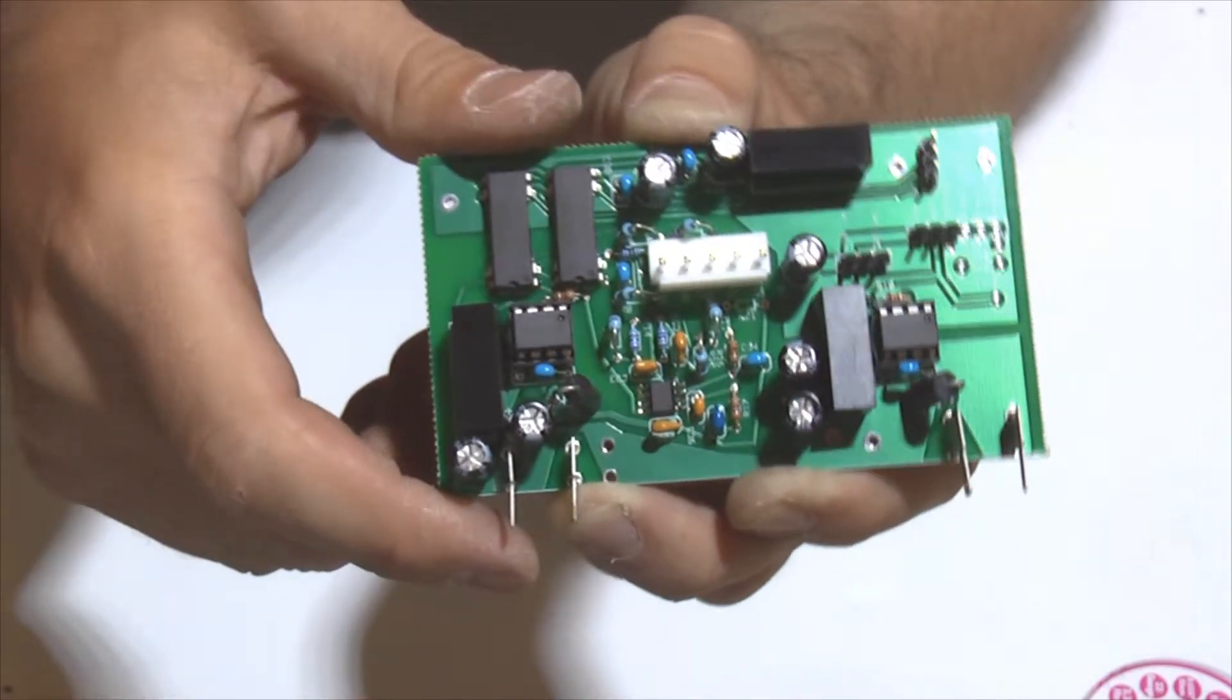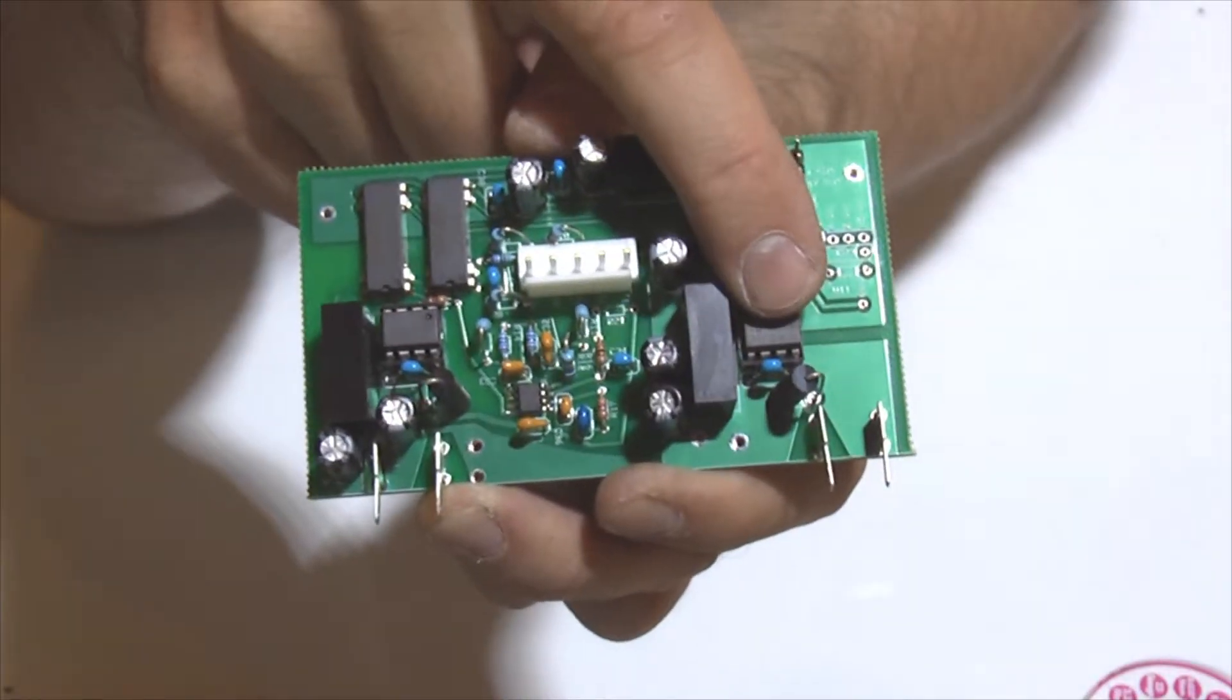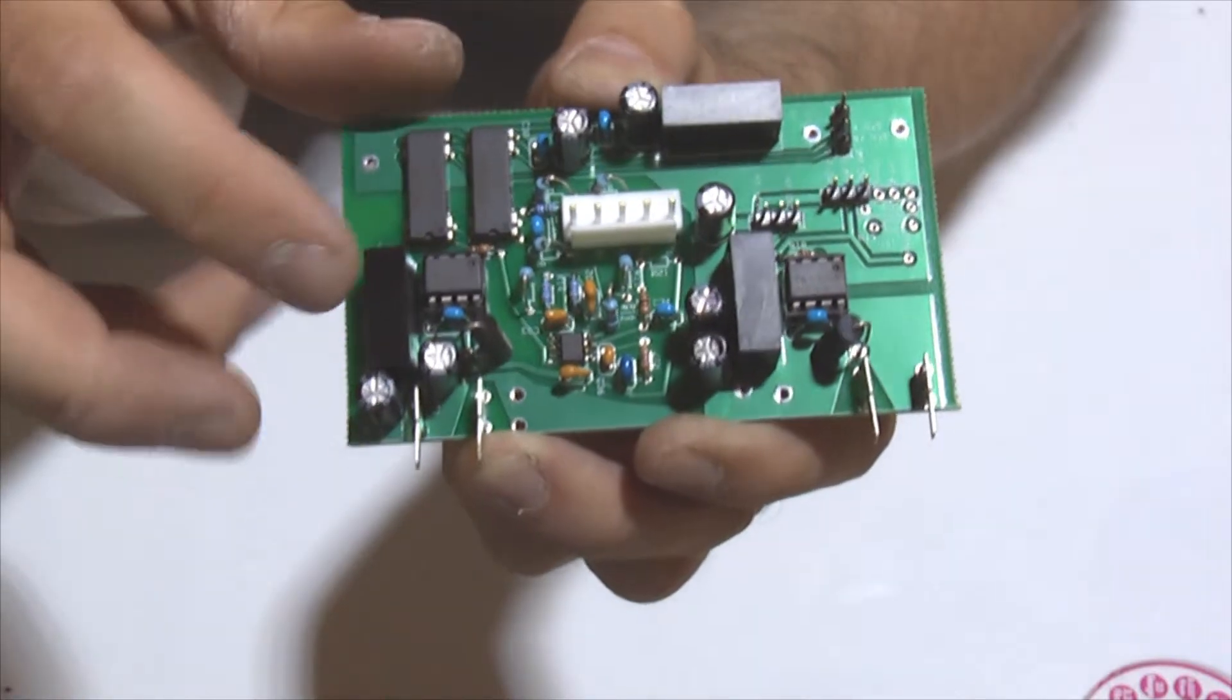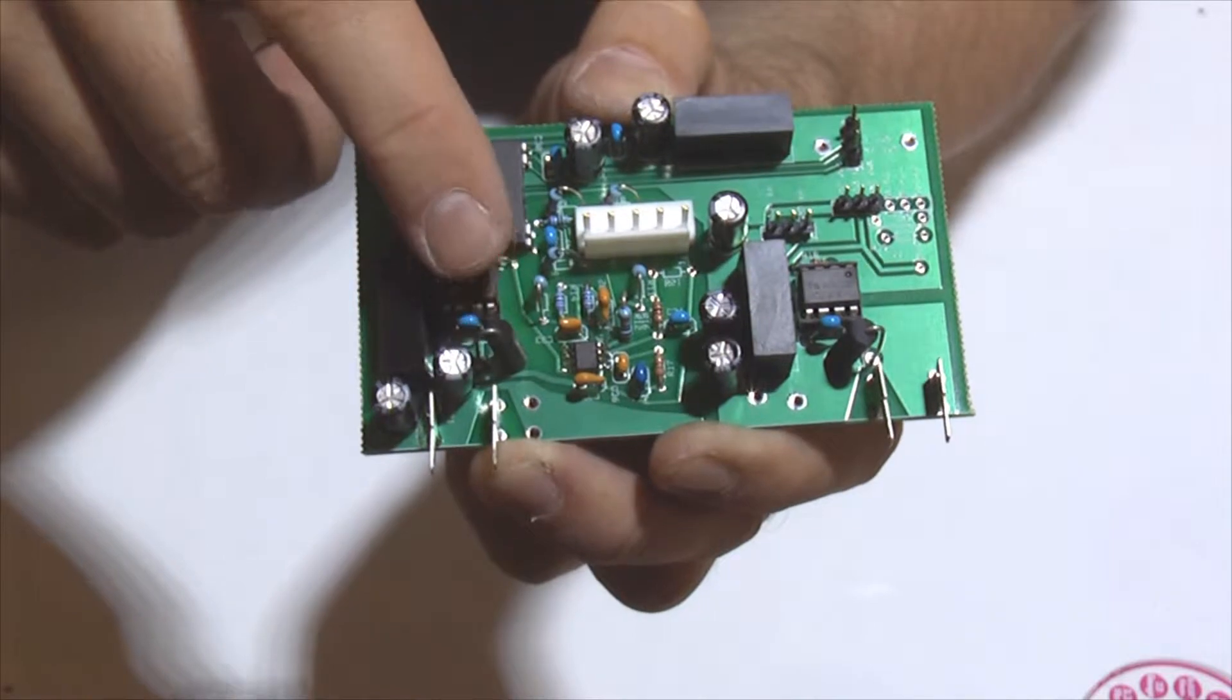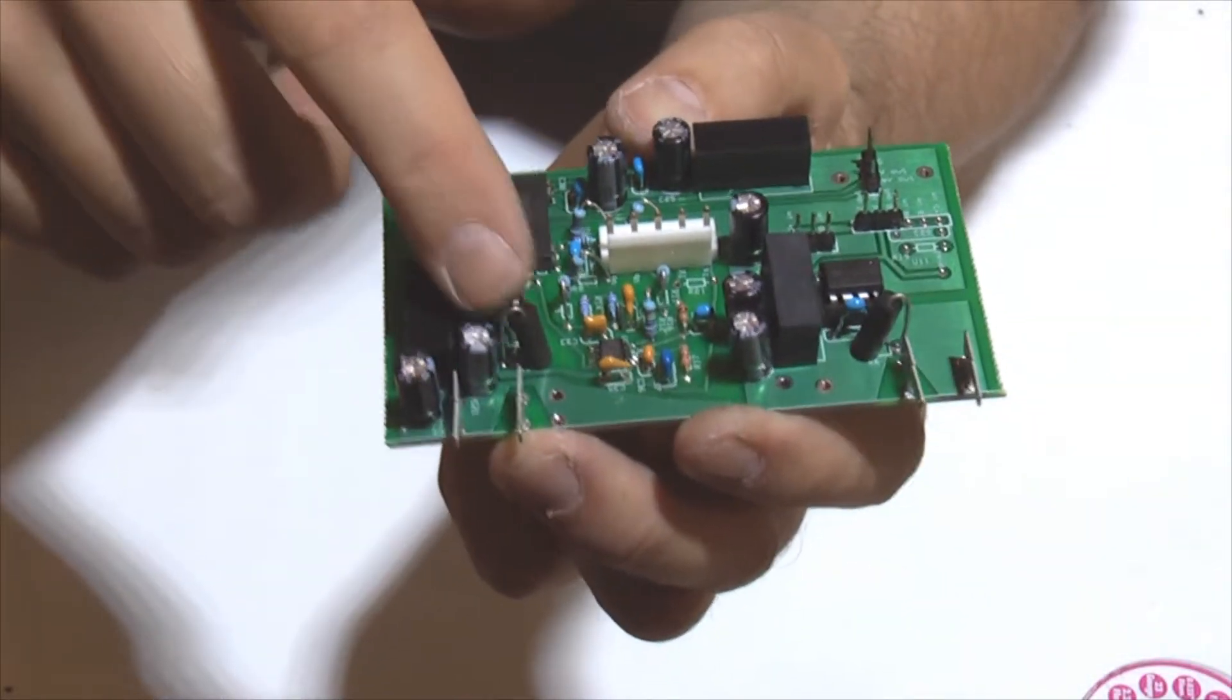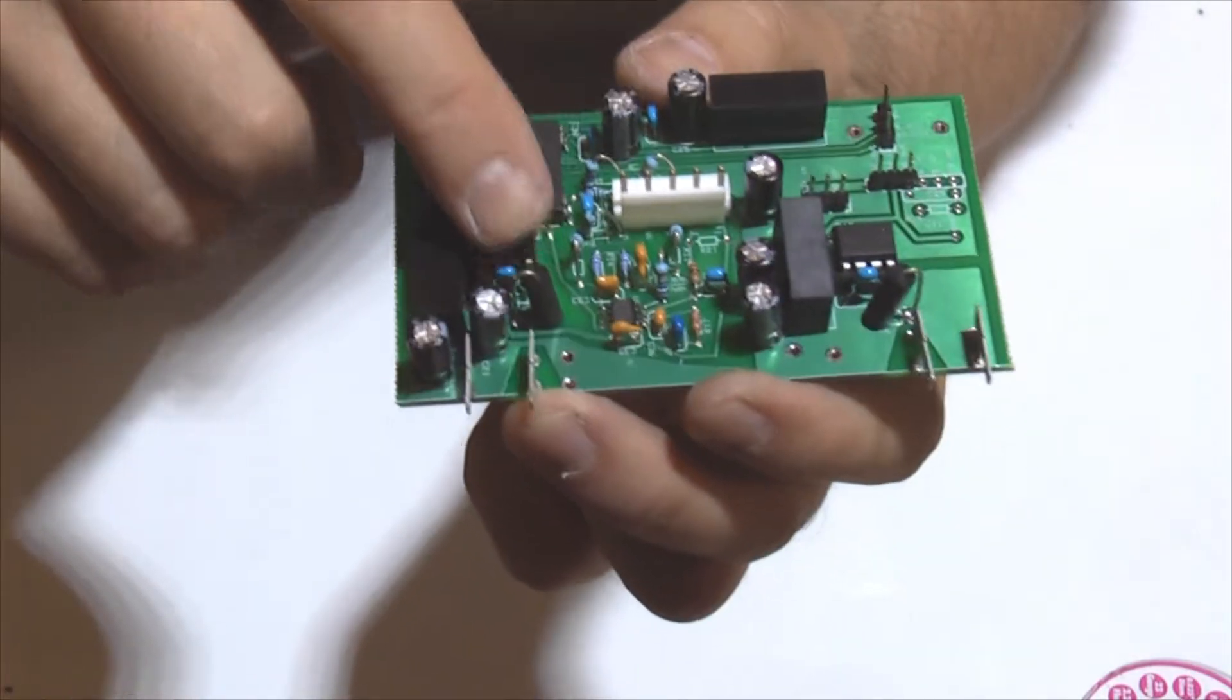These two chips are the A3120 IGBT drivers, and they drive the IGBTs through these resistors. These are 10 ohm non-inductive wire wound resistors with special winding methodology. They're rated for 3 watts each, and this is sufficient for the operation here.